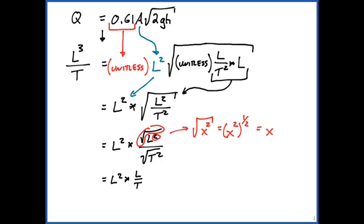And so we end up with length squared multiplied by length per time. Or ultimately, we can prove to ourselves length cubed per time is equal to length cubed per time. That's the outcome we're after. That proves that this is dimensionally homogeneous, meaning we have an equation that essentially is the same unit on either side.